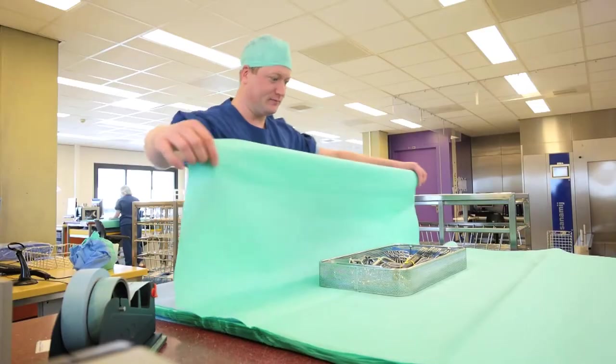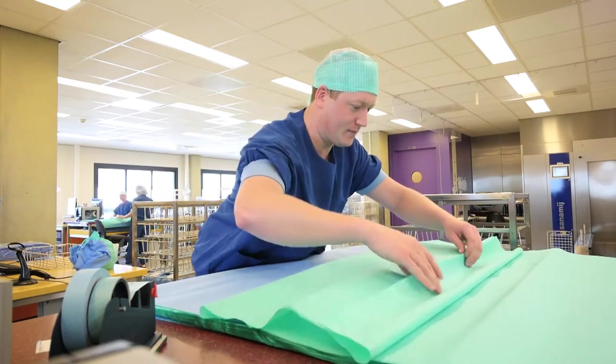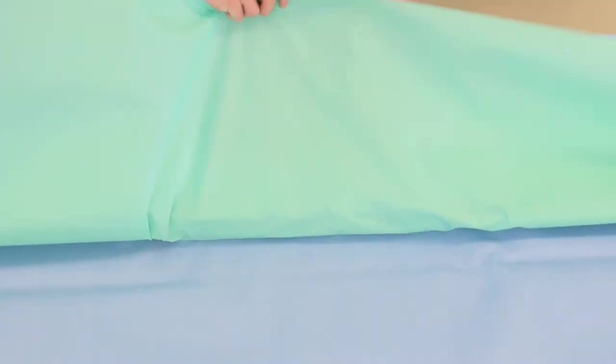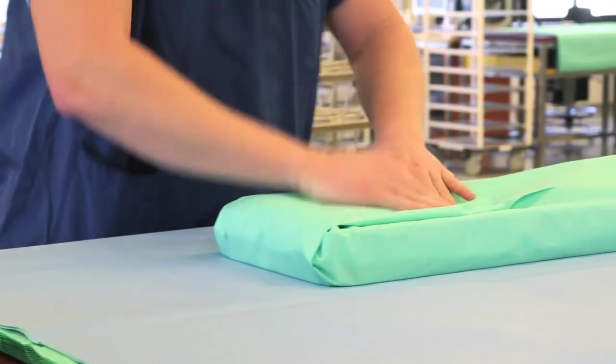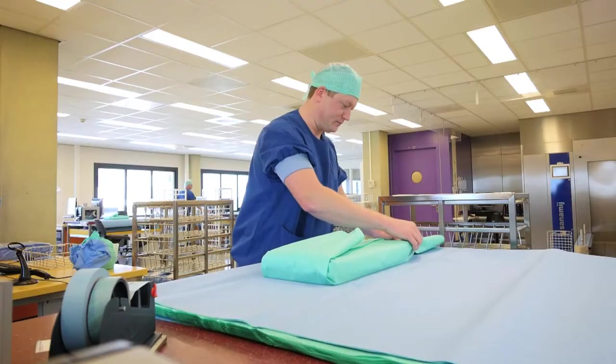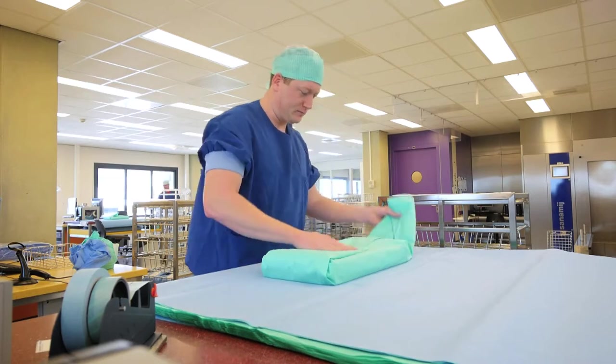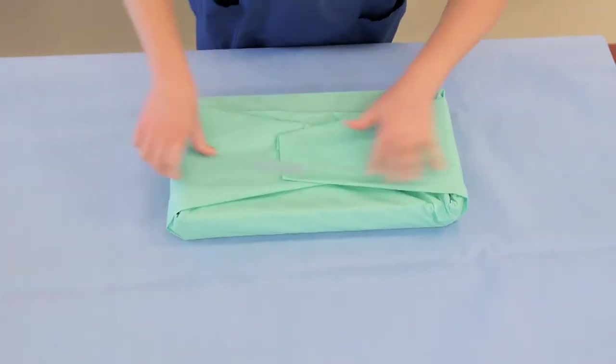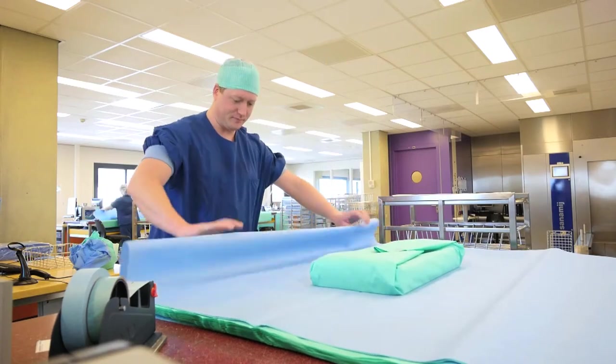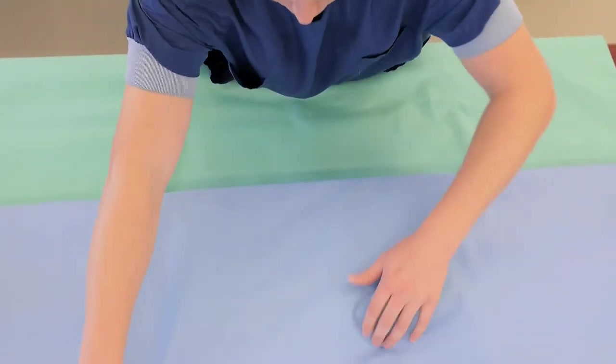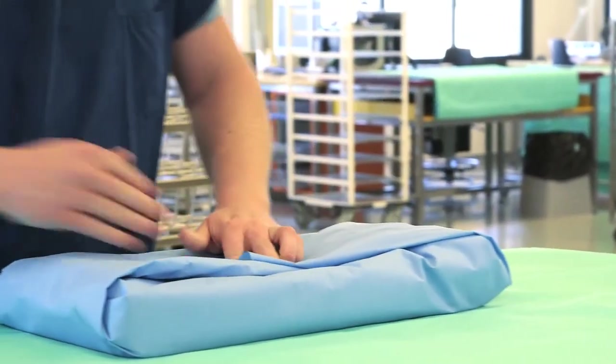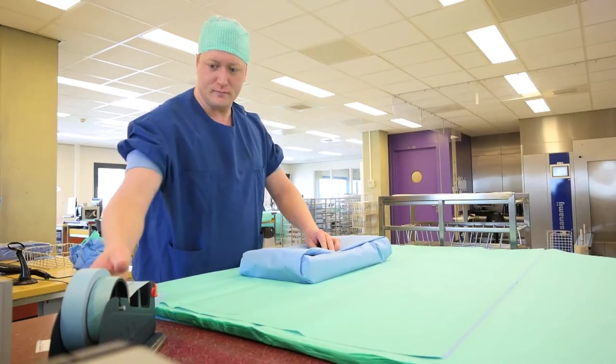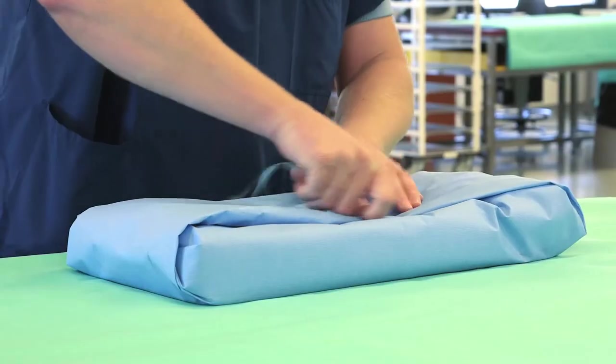Wrap is often folded around trays and instruments so as to create a tortuous path which creates a barrier to microbes and enables aseptic opening. This can be achieved in a number of ways. The wrapping method shown here is the one used at the Martini Hospital in Groningen. Most wraps are secured by the use of sterilization autoclave tape or masking tape.